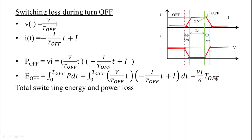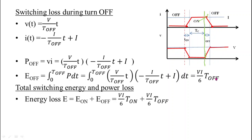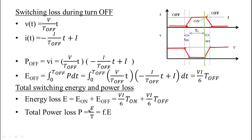Total switching energy losses equal the energy losses during on state plus energy losses during off state. Adding these gives: E_total = (VI/6) × T_on + (VI/6) × T_off. To get total power losses P, divide total energy losses by time period T. Since frequency f equals 1/T, total power losses can be written as P = f × E_total. You don't need to memorize all formulas — just know the procedure to calculate energy and power losses during switching.